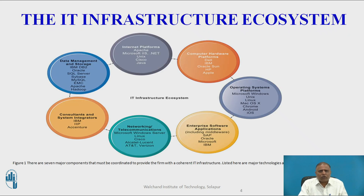This is the diagram of the IT infrastructure ecosystem. The first element is the operating system platform, which includes Microsoft Windows, Unix, Linux, Mac OS X, Chrome, Android, and iOS.